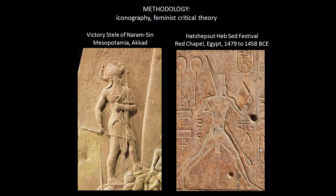Now we move to feminist critical theory, which is appropriate because we have symbols communicating masculinity that encourage us to think about gender. The most curious thing of all is that we're looking at a female ruler. But if you didn't know Hatshepsut was a woman, you would not make that distinction based on the anatomy shown here — there are no breasts, no typically female build. This is where our feminist analysis comes from: why do we see this?